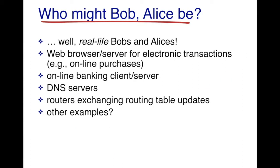Who might Alice and Bob be? In the real world there could be real people who want to communicate securely. Other examples include a web browser and server for electronic transactions such as online purchases on Amazon, DNS servers, and routers that exchange routing tables with each other. There are many other examples in the world of network security.